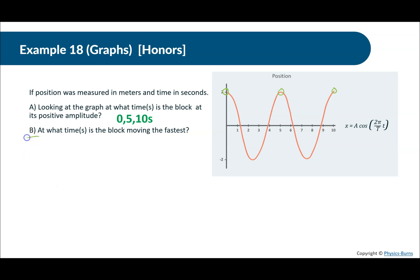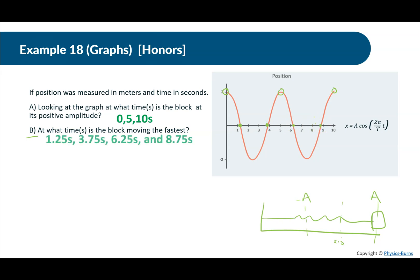Part B: At what time is the block moving the fastest? It starts out at its amplitude, and the negative amplitude is at the other end. The block moves fastest at position zero. That happens at 1.25 seconds, 3.75 seconds, 6.25 seconds, and 8.75 seconds. A full cycle is five seconds, and from the amplitude to position zero is one quarter of that — five divided by four gives 1.25 seconds.